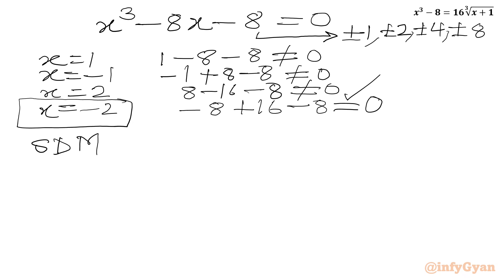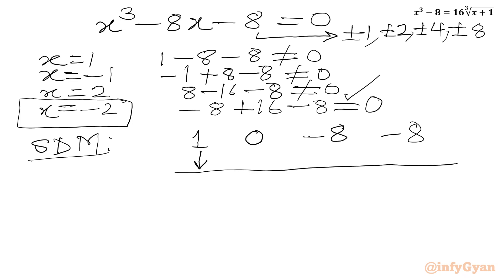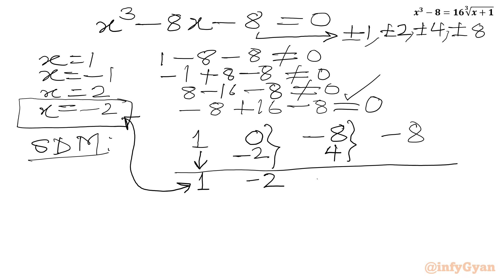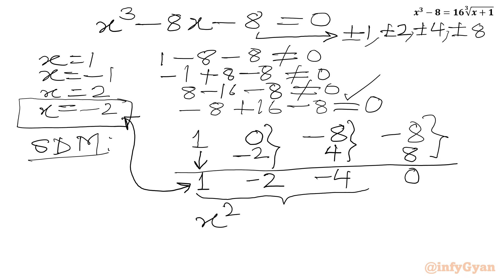We use synthetic division. Writing the coefficients of the cubic: 1, 0, -8, -8. With root -2: bring down 1; multiply 1 × (-2) = -2, add to 0 to get -2; multiply -2 × (-2) = 4, add to -8 to get -4; multiply -4 × (-2) = 8, add to -8 to get 0. The resulting quadratic is x² - 2x - 4 = 0.